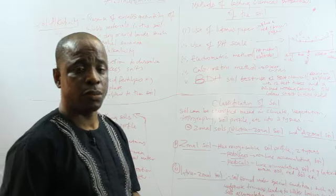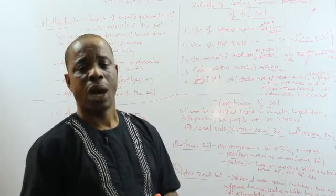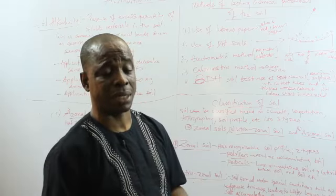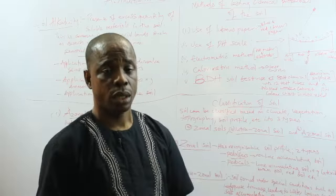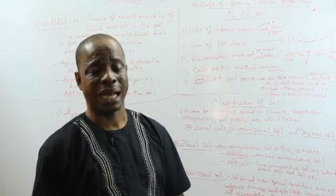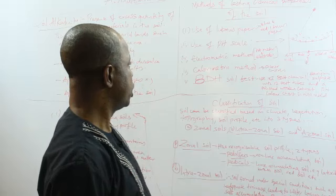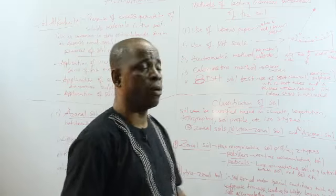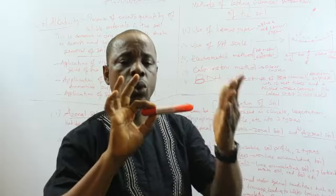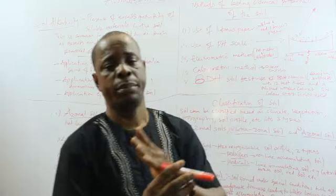Use of litmus paper. Litmus papers are chemical papers that respond to acidity or alkalinity by changing color. When dipped into acid or when dipped into alkaline or base, the color changes. Litmus paper could come in a form of blue or a form of red, or it could be only one litmus paper with two different colors at both sides. One side could be red, the other side could be blue.